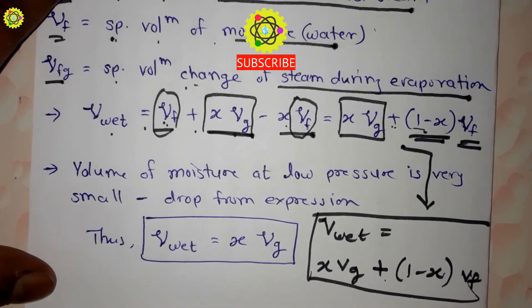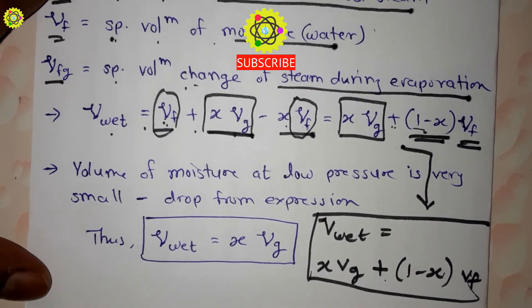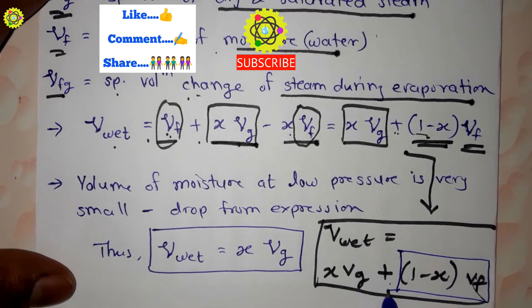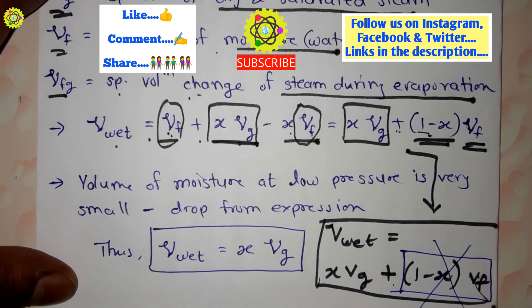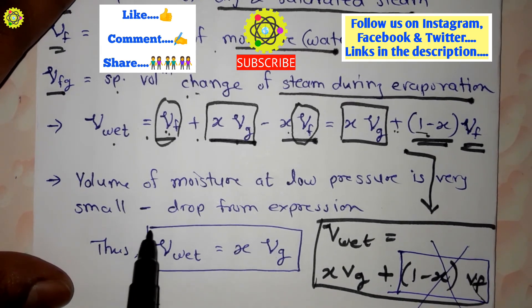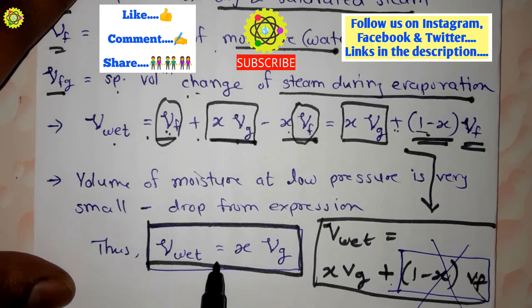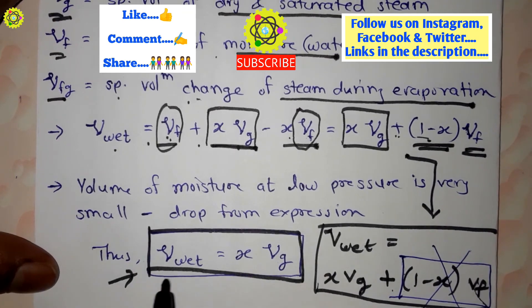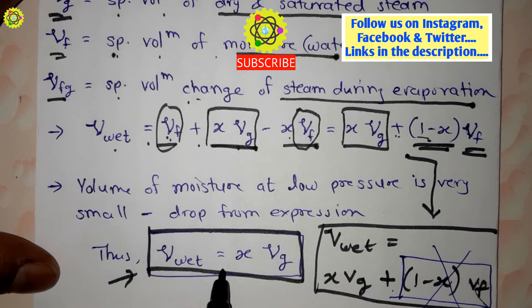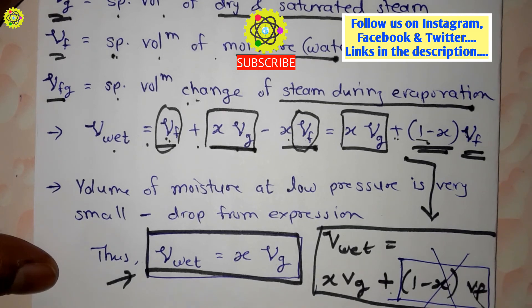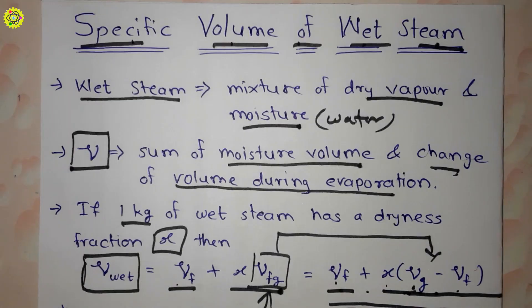The volume of moisture at low pressure is very small, so we drop it in some cases. This equation then becomes v_wet equal to x·vg. That is, the specific volume of wet steam equals dryness fraction multiplied by the specific volume of dry and saturated steam.